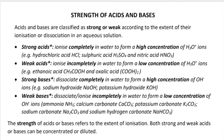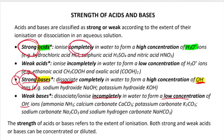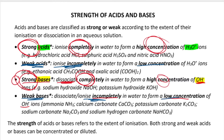The same applies for bases. Strong bases dissociate completely in water to form a high concentration of hydroxide ions. Weak bases ionize incompletely in water to form a low concentration of hydroxide ions. So when you think of acids, think of hydronium ions; when you think of bases, think of hydroxide ions. When you think of strong — whether strong acid or strong base — think completely ionizing, completely dissociating to form high concentrations of ions. When you think of weak acids or weak bases, think incompletely ionizing, forming low concentrations of ions.